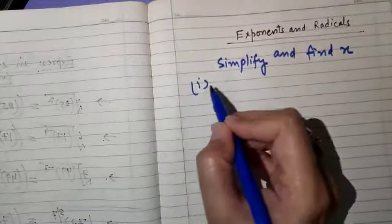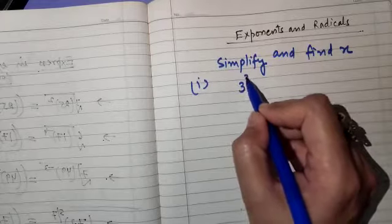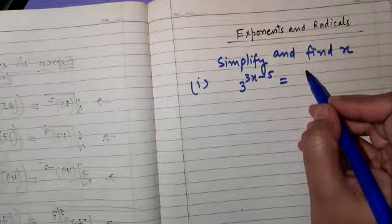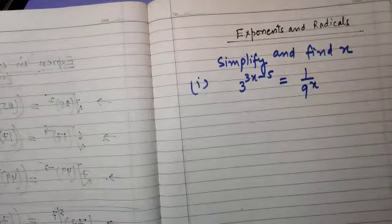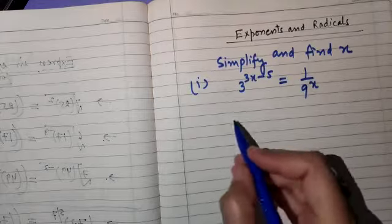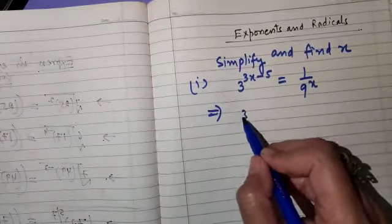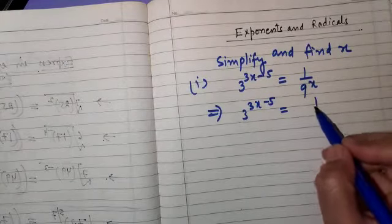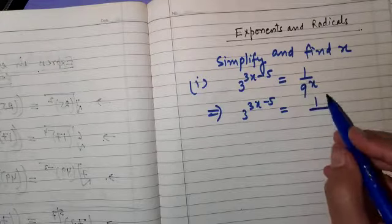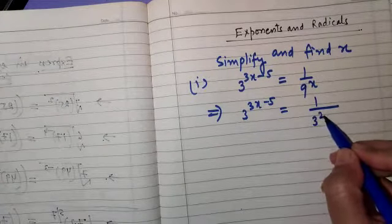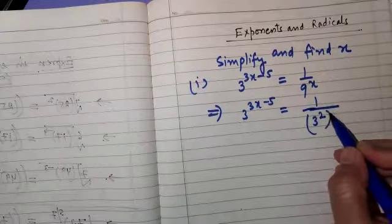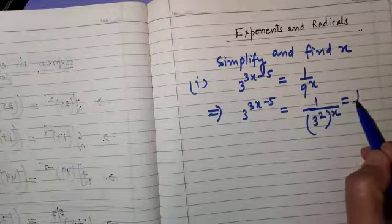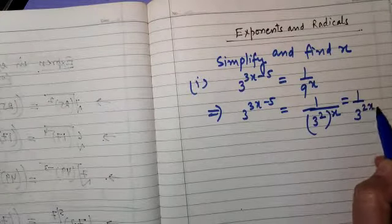The first part: 3 raised to the power 3x minus 5 is equal to 1 upon 9 raised to the power x. This implies 3 raised to the power 3x minus 5 is equal to 1 upon — we can write 9 as 3 squared, so this becomes 3 squared raised to the power x, which equals 1 upon 3 raised to the power 2x.